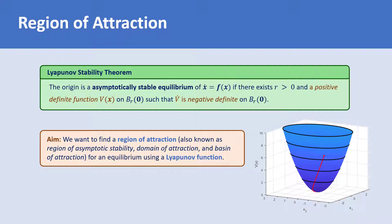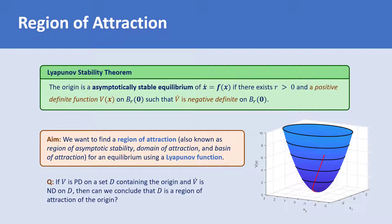One may jump to the conclusion that if a function v is positive definite on a set d containing the origin and v-dot is negative definite on d, then d is a region of attraction of the origin. We will show by an example that this conjecture is not true.